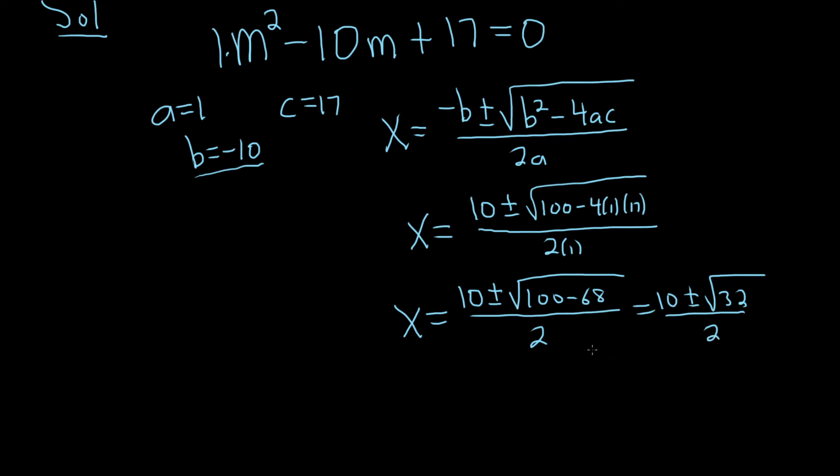So the square root of 32 can probably be simplified. The largest factor of 32 that's a perfect square is 16. So you can write it as 16 times 2, so that's 4 square root of 2. So x is equal to 10 plus or minus 4 square root of 2, over 2.